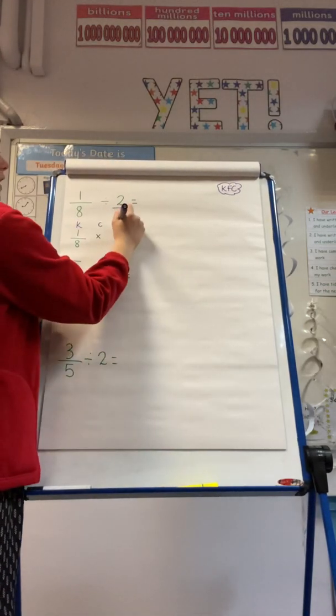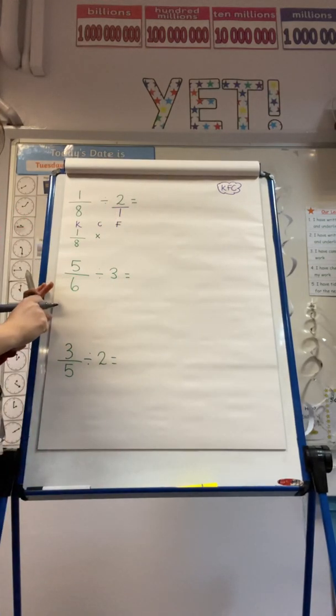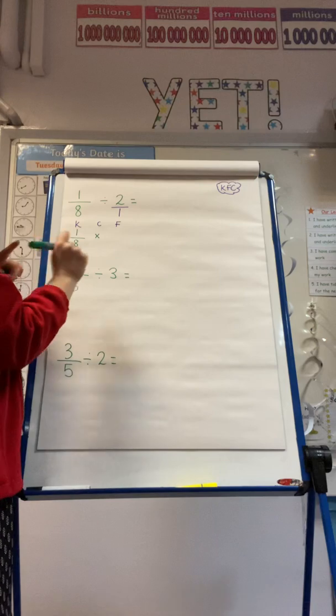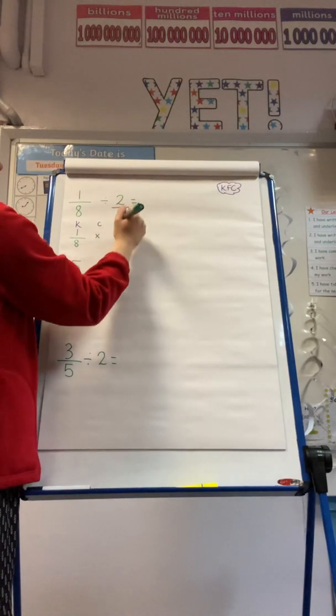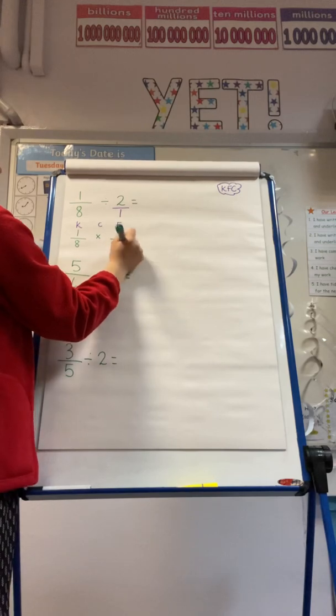And then finally, I need to flip. And this means I am flipping my fraction of 2 over 1. So my denominator now becomes my numerator, and my numerator now becomes my denominator.